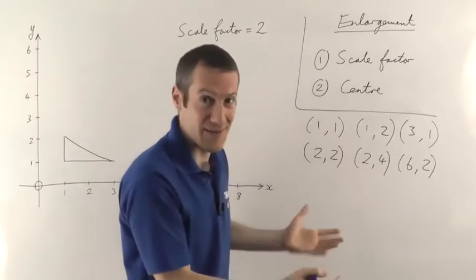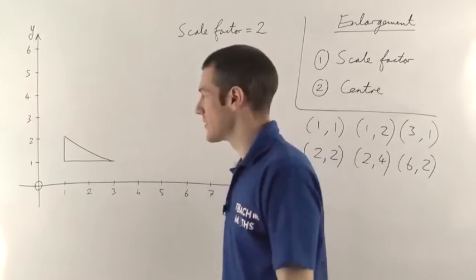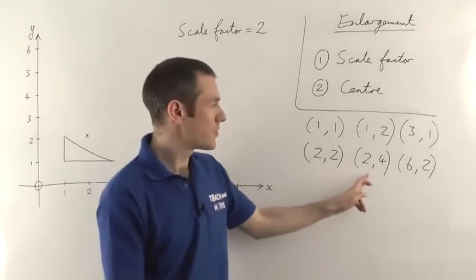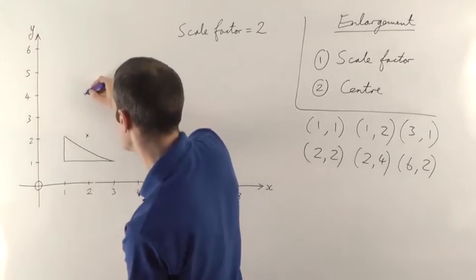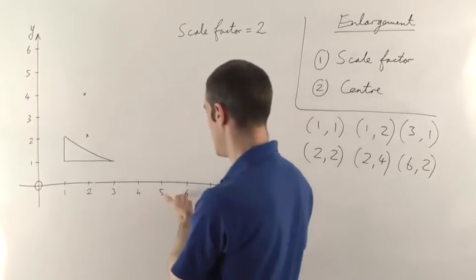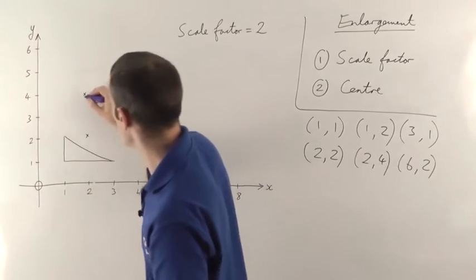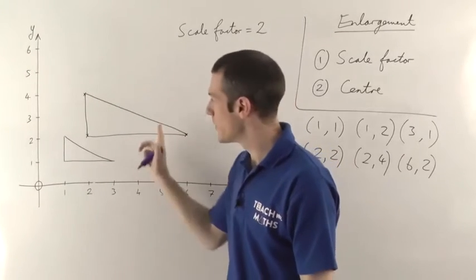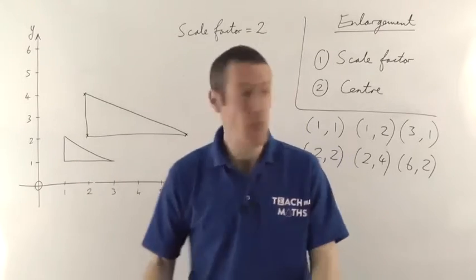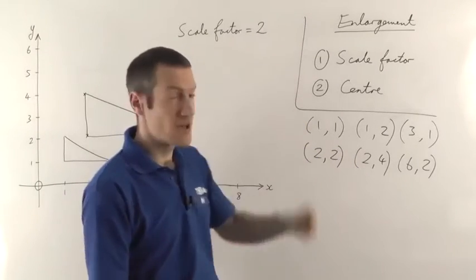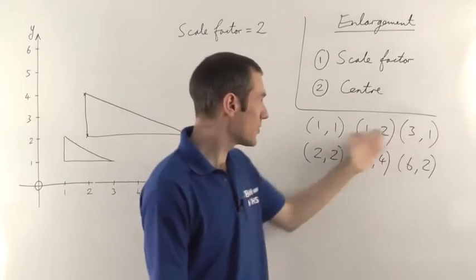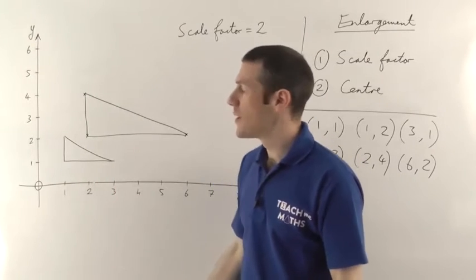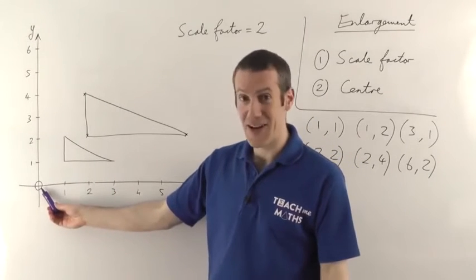If the scale factor was 3, then it would become 3 times as big. Then you just plot the points: (2,2), (2,4), and (6,2). Join up your 3 points and you get your enlarged triangle. All the lengths on this triangle will be twice as long as they are on the original triangle because the scale factor is 2. You just take the coordinates and multiply them by the scale factor — that will work for any shape at all, as long as you know the coordinates of the corners, but only if the centre of enlargement is the origin.